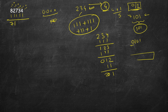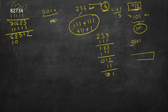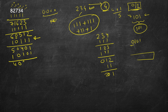Subtracting 11111 from 82734 gives 71623. Subtracting 11111 again gives 60512. Now there's a 0, so instead of 11111 we use 10111 — wherever a digit is 0 we put 0, since we cannot subtract anything greater than 0 there. Our goal is always to take the maximum valid decibinary value. So we get 50401, then subtract 10101 to get 40300.